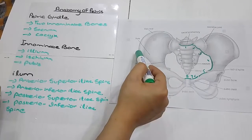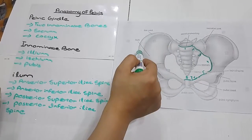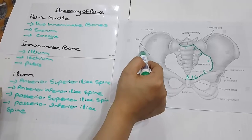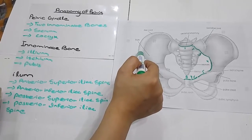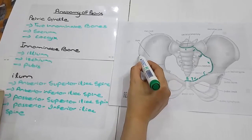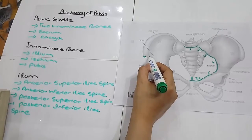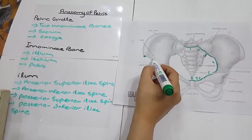A bony prominence is felt in the front of the ileum crest and this is known as the anterior superior ileum spine. You could mark it like this. A short distance below this is the anterior inferior ileum spine.